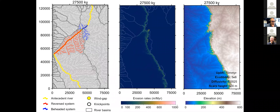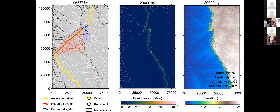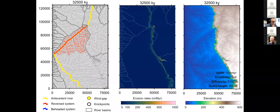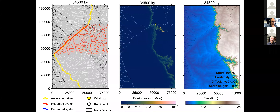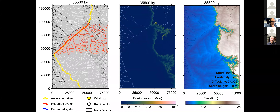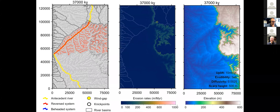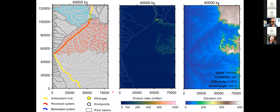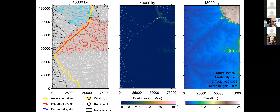The wind gap migration continues until it loses the competition to another stream network further downstream, which causes a base level fall that equilibrates the system and stops the wind gap's movement.